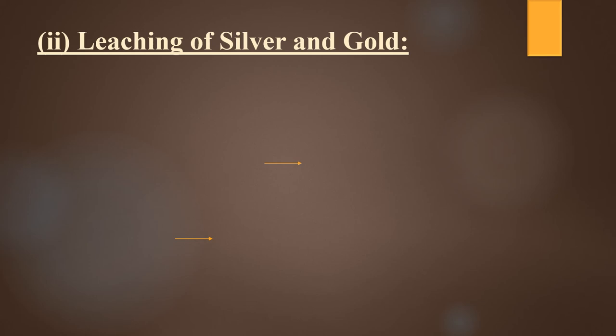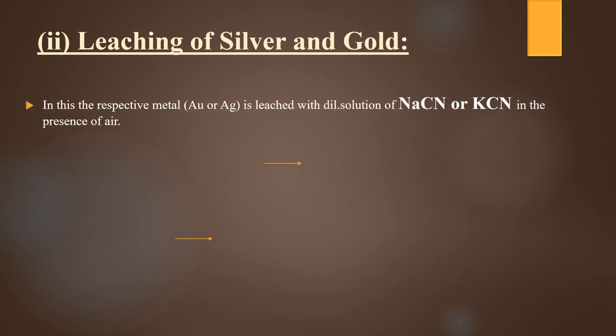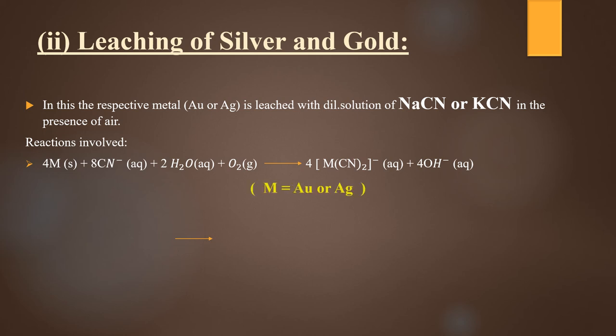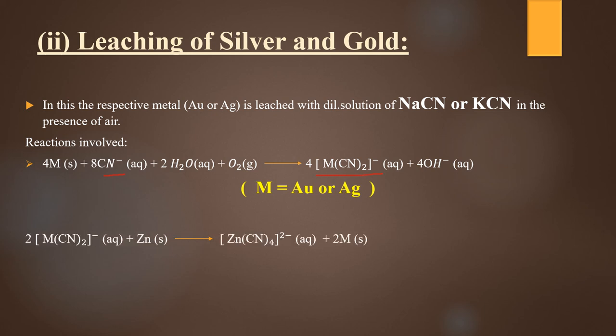Silver and gold can also be leached by a similar process. The respective metal — silver or gold — is leached with a dilute solution of NaCN or KCN in the presence of air. The metal combines with cyanide from NaCN or KCN, water, and oxygen to form a complex. This complex is then treated with zinc metal, which displaces the silver or gold, giving the metal in its pure form.